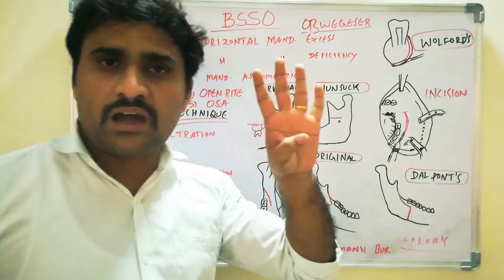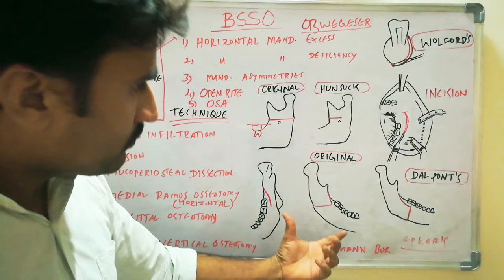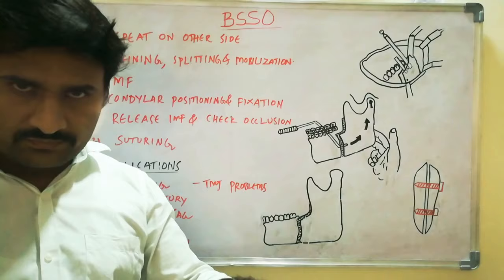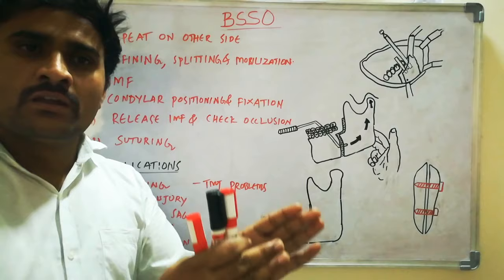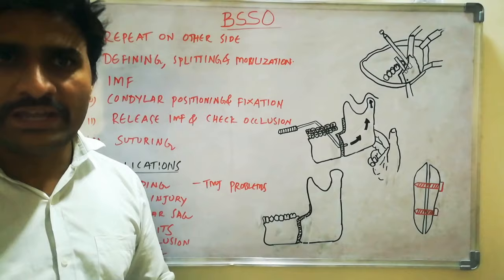There are four main modifications: Hunsuck modification, Dal Pont modification, Wolford modification, and Epker's modification. One special consideration is the presence of mandibular third molars — ideally they should be extracted six months before surgery. If present at the time of surgery, you should not change the osteotomy design; instead, cut through the crown of the third molar and remove it.